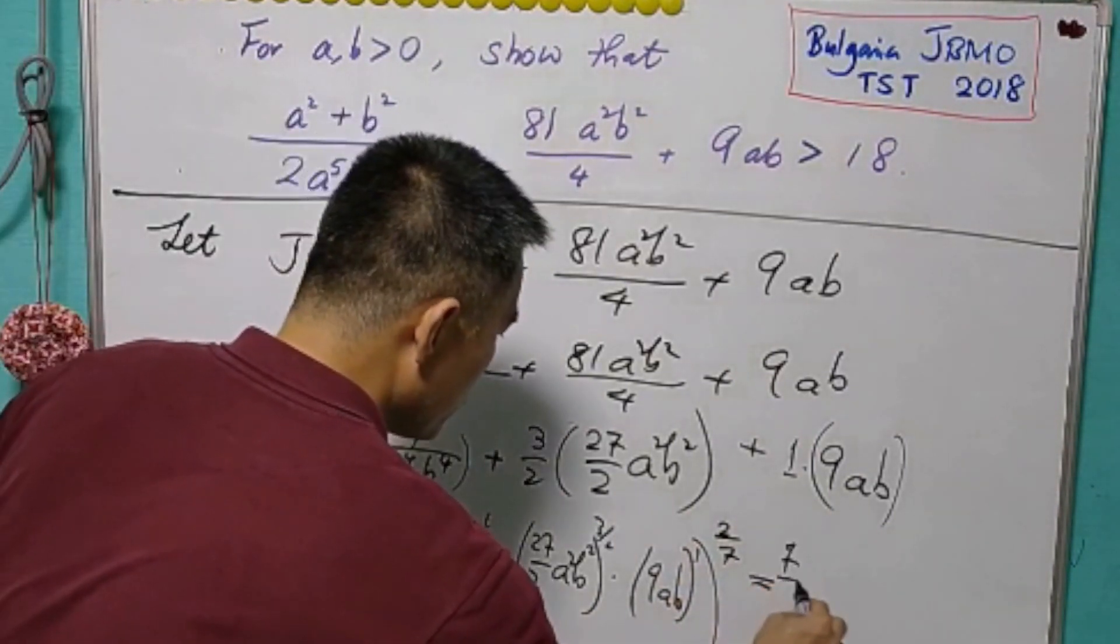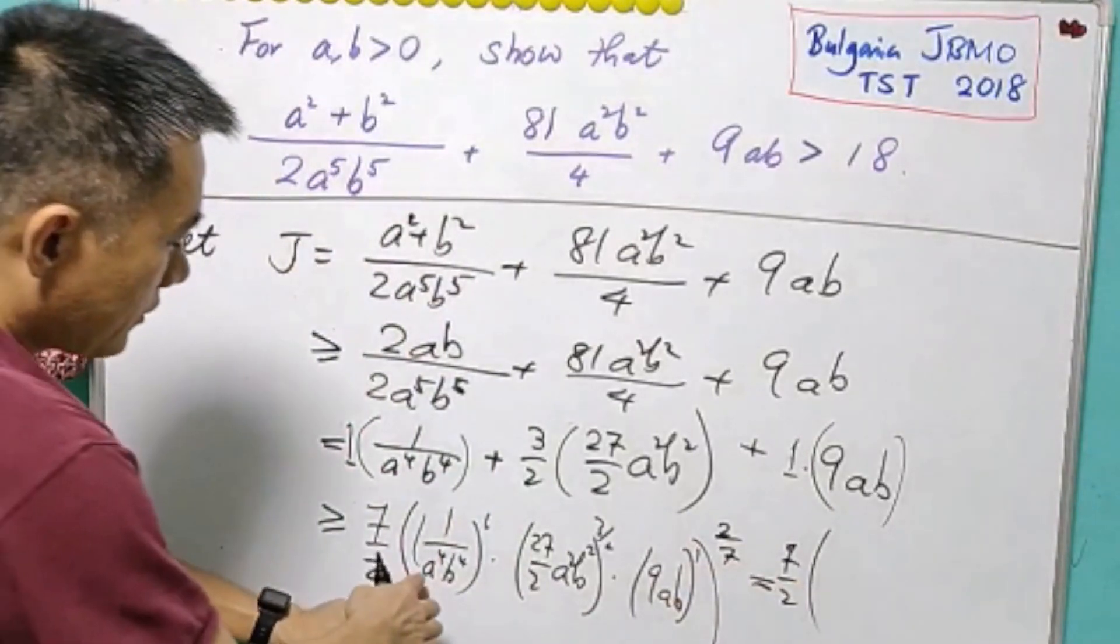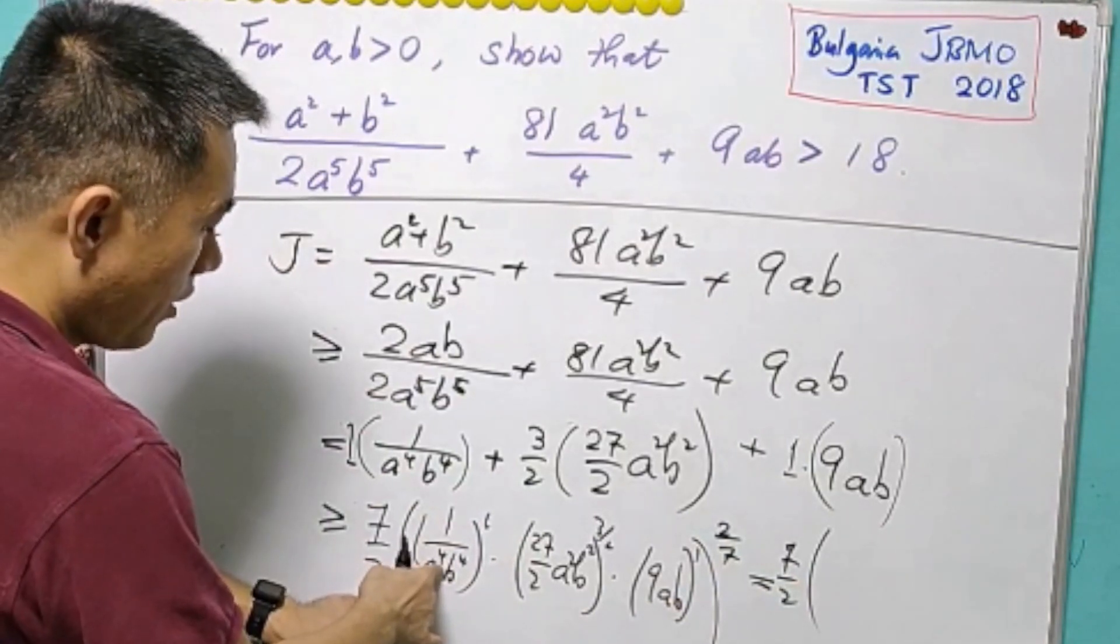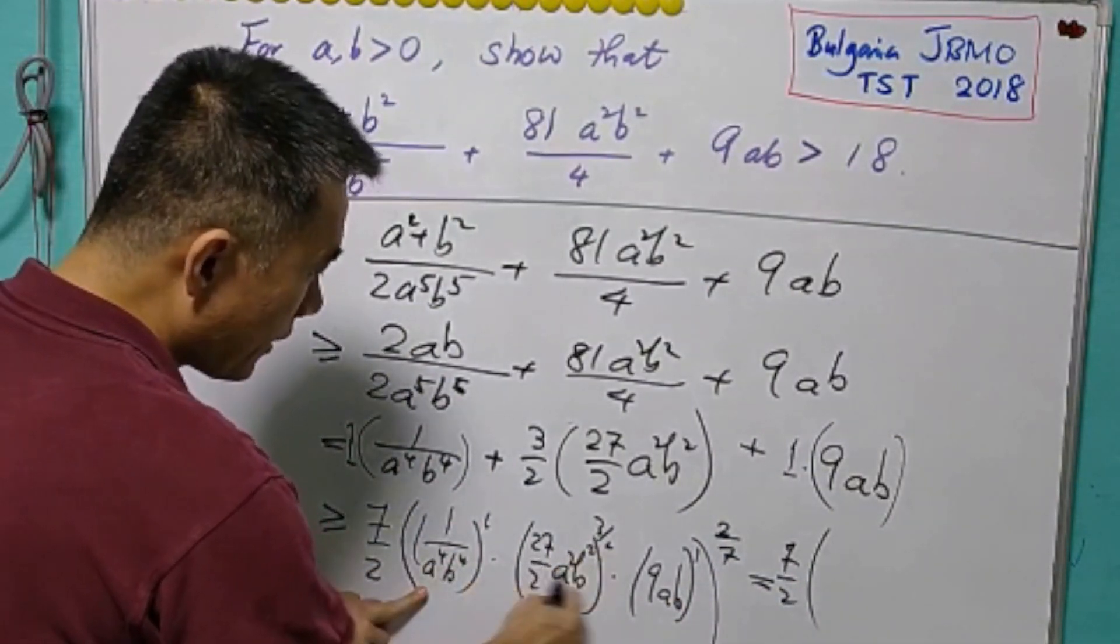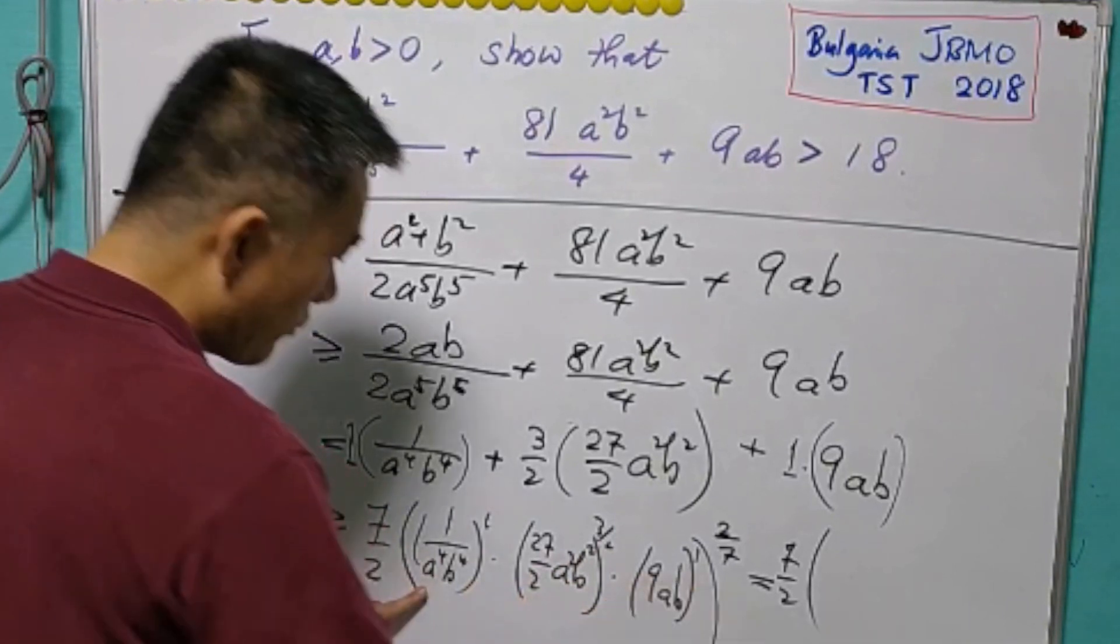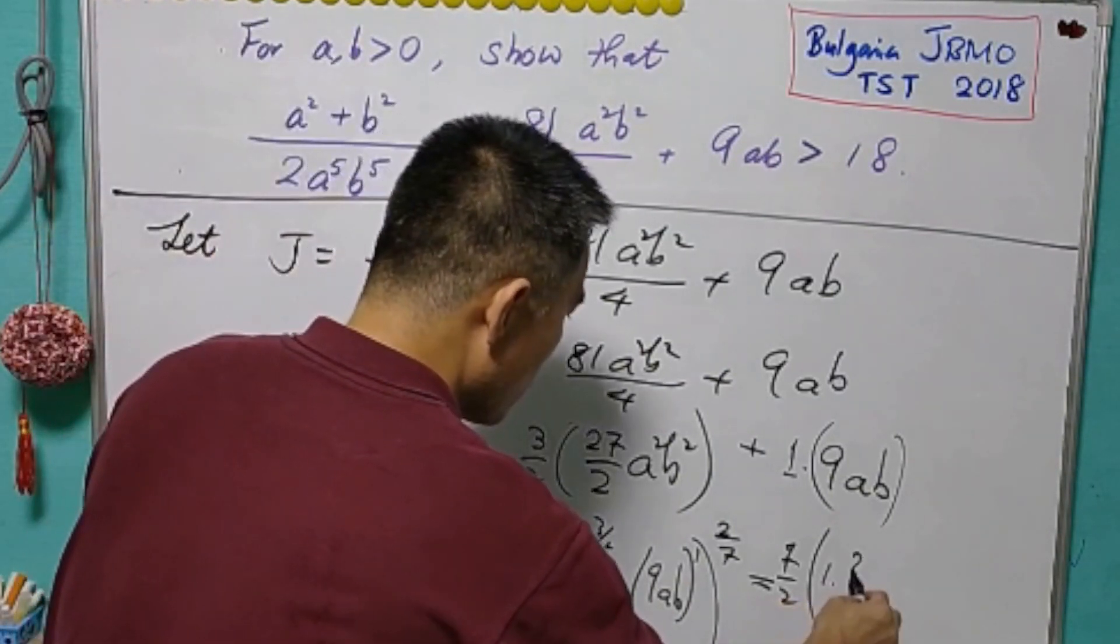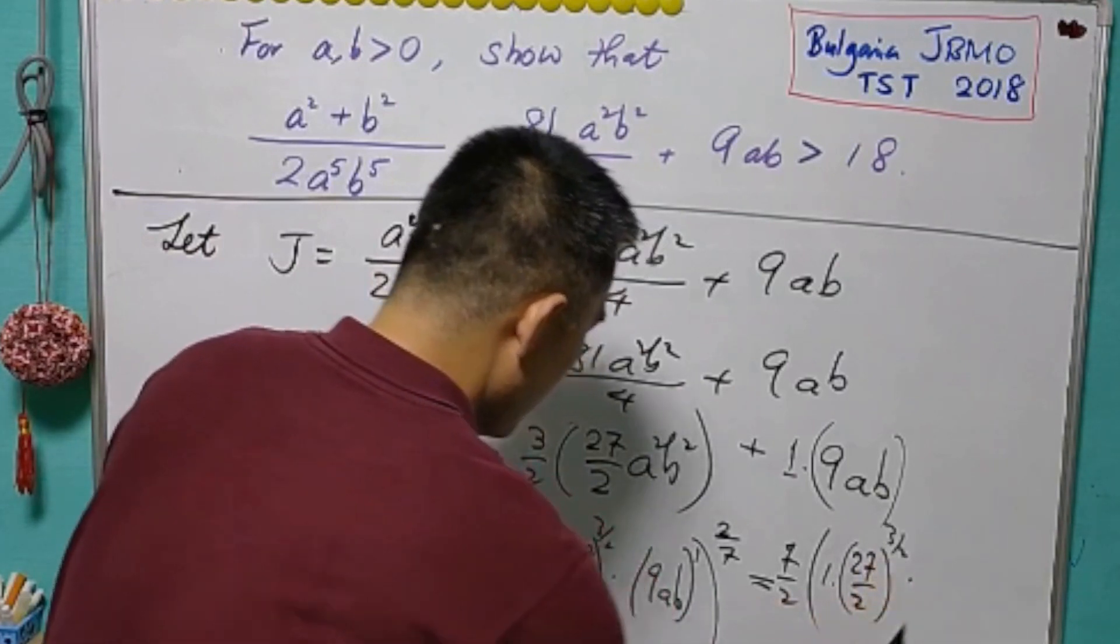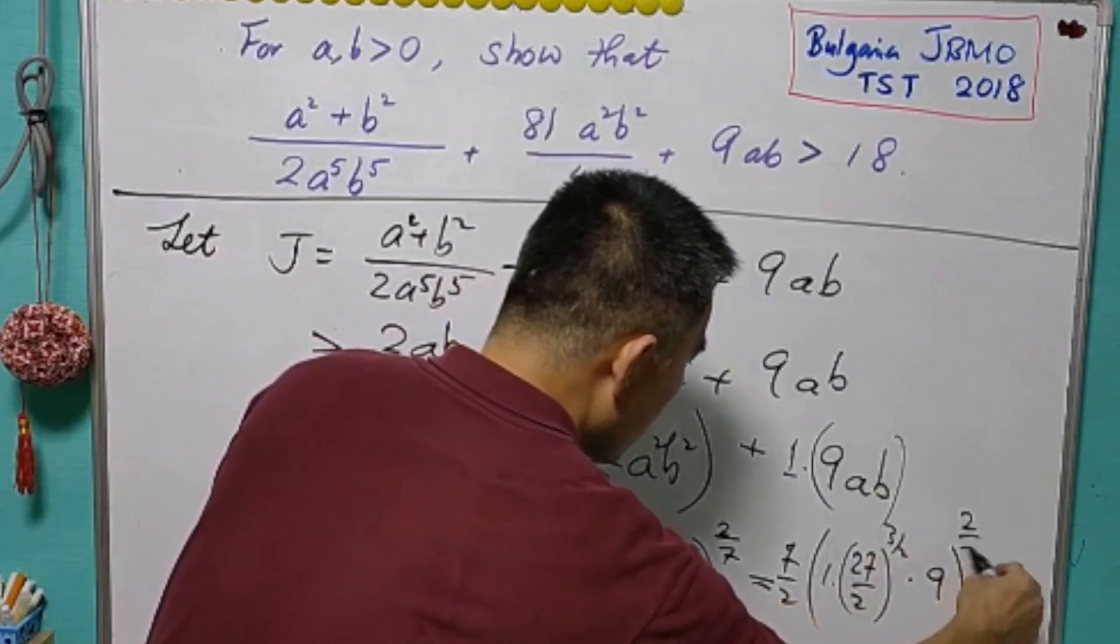So, with this, this equals to 7 over 2. Now, we'll see that the term in a for the denominator, the power is 4. For the numerator, here, the power is 3 and here is 1. So, they will cancel off. So, that's for b. So, now we have only 1. And this is 27 over 2 to the power of 3/2. And this is 9 to the power of 1. And everything to the power of 2 over 7.